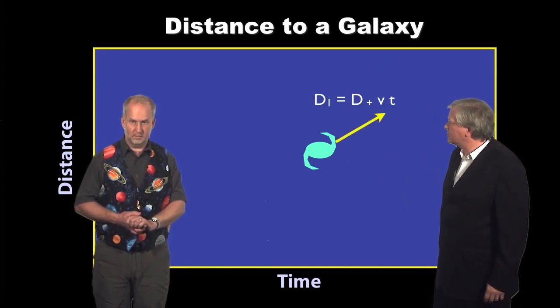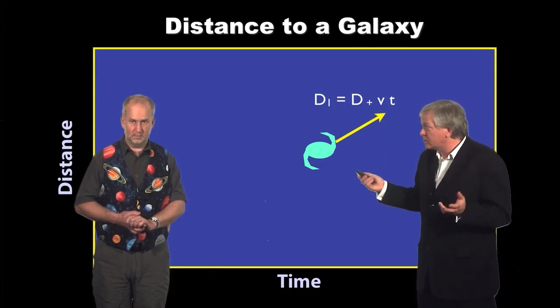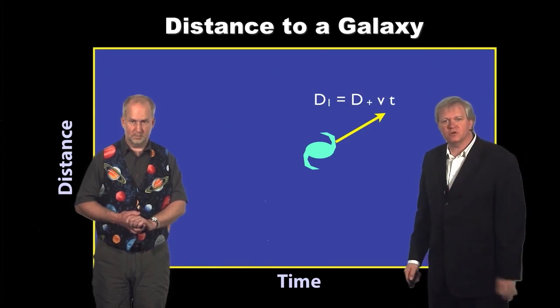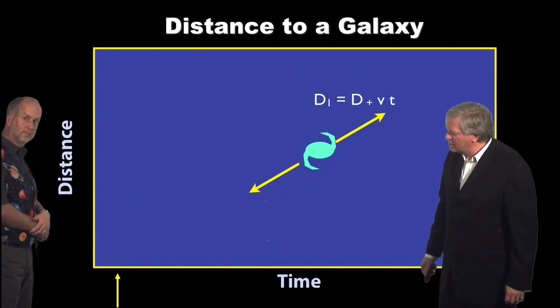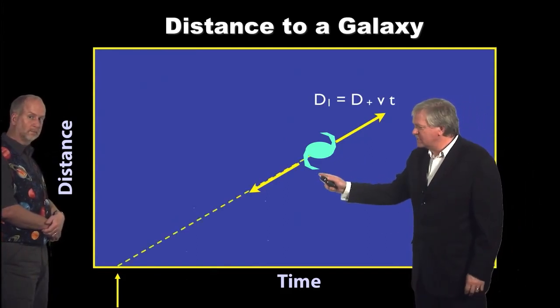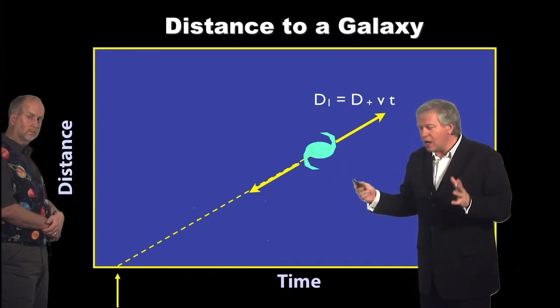And so you expect the velocity to be changing in time using the same relationships we'd use for a projectile here on Earth. And therefore, we can run the universe in reverse. We can back it back in time. And when we calculate when this galaxy is at the same place Earth is, then we know we are at the time of the Big Bang.